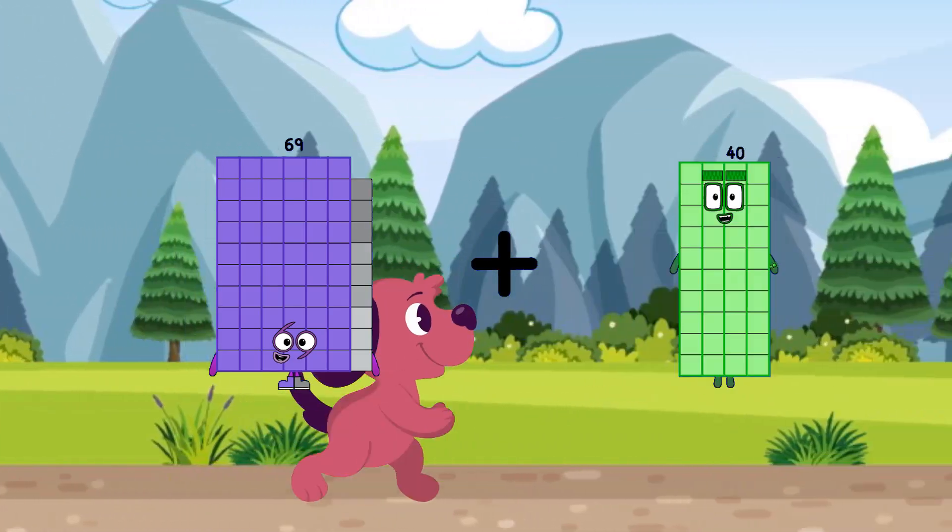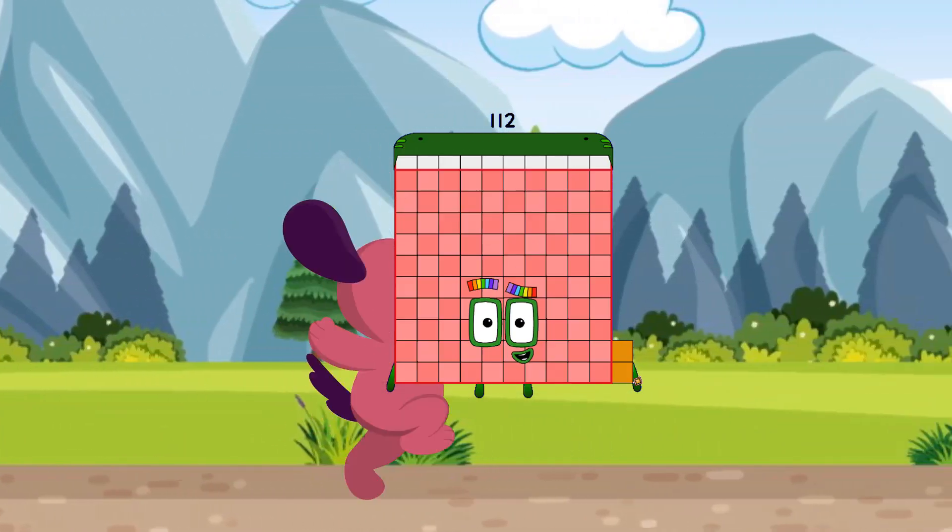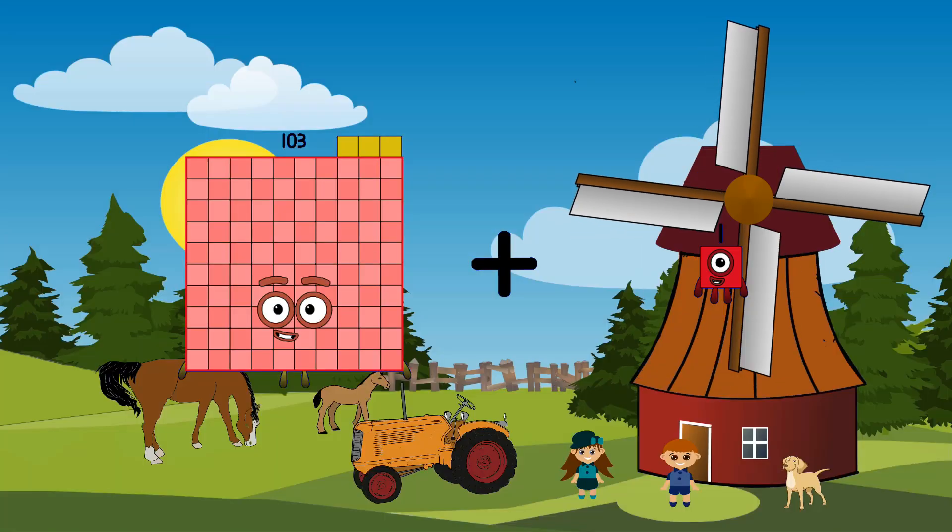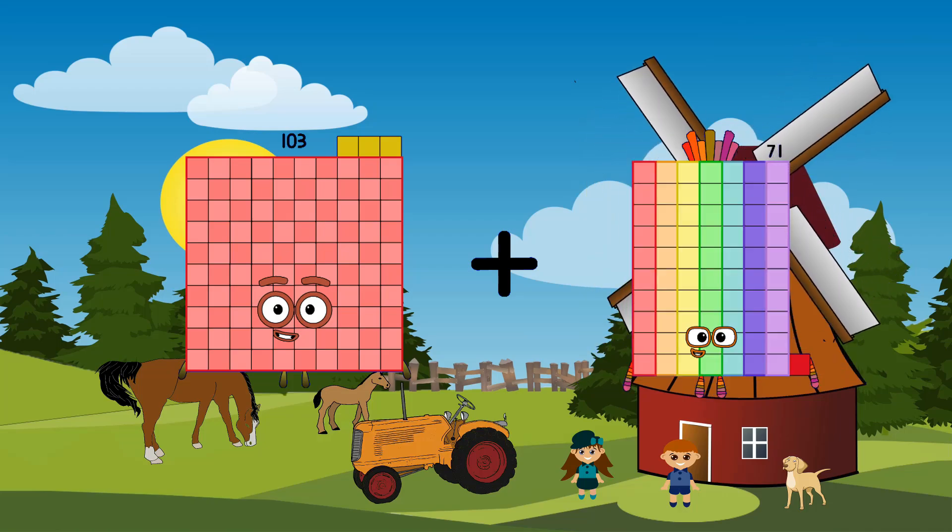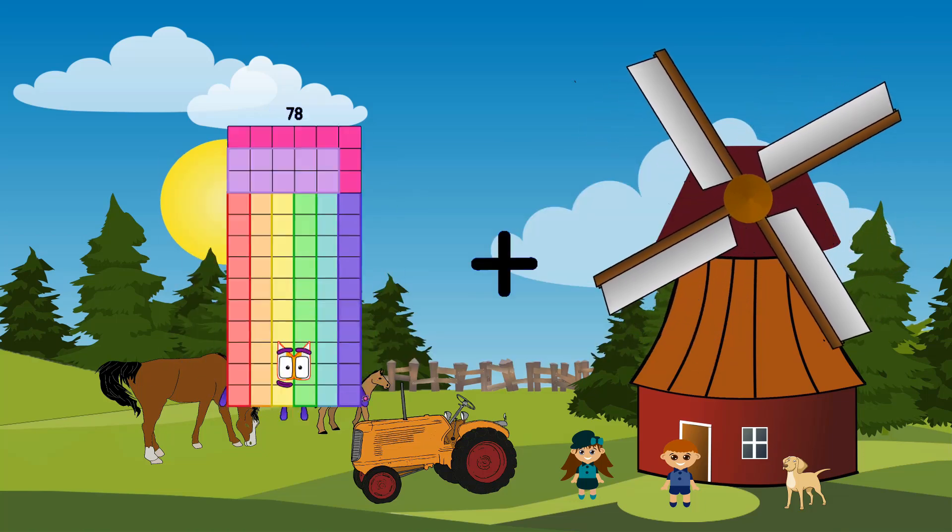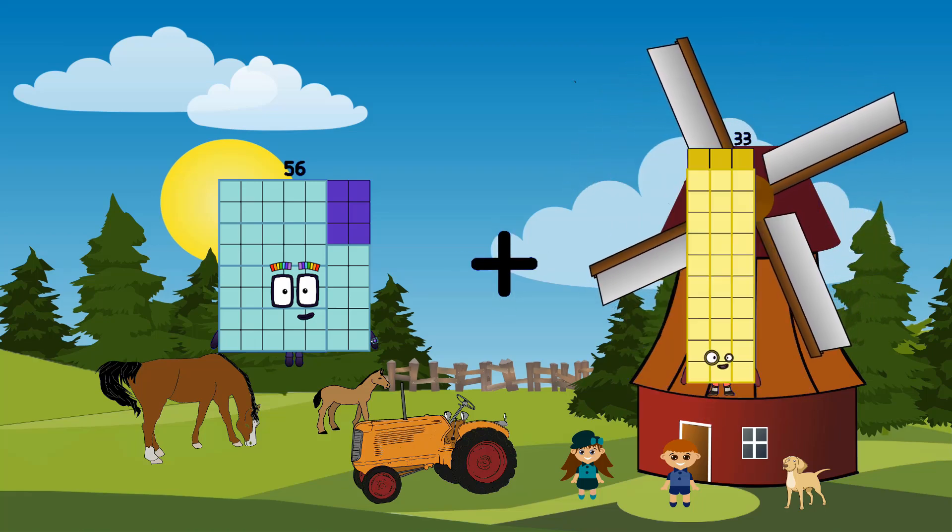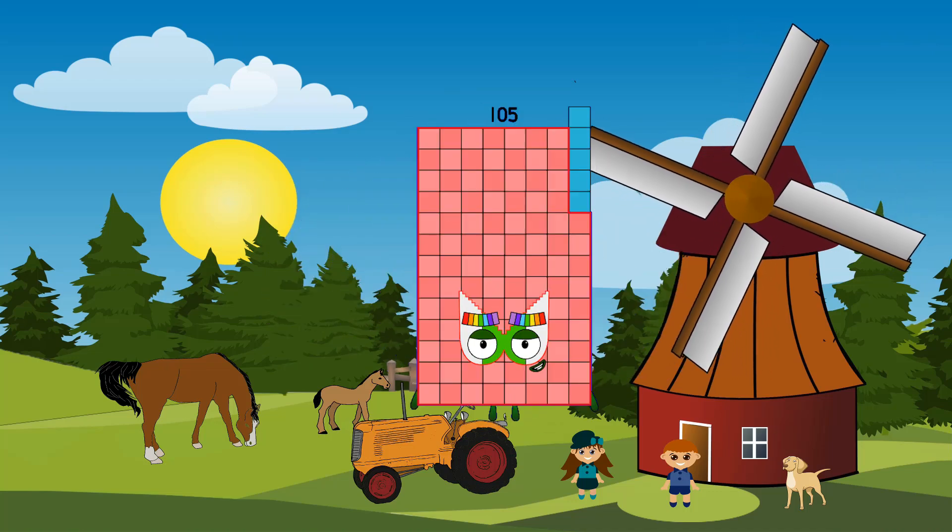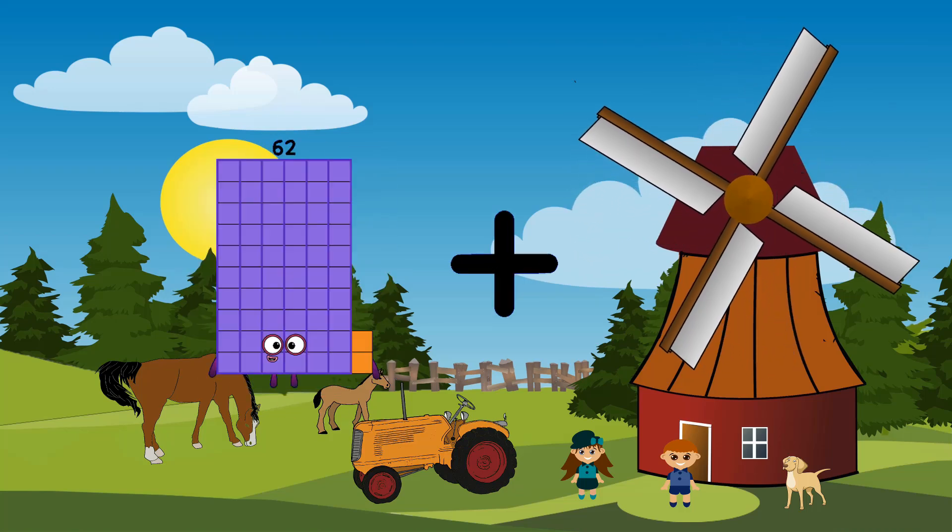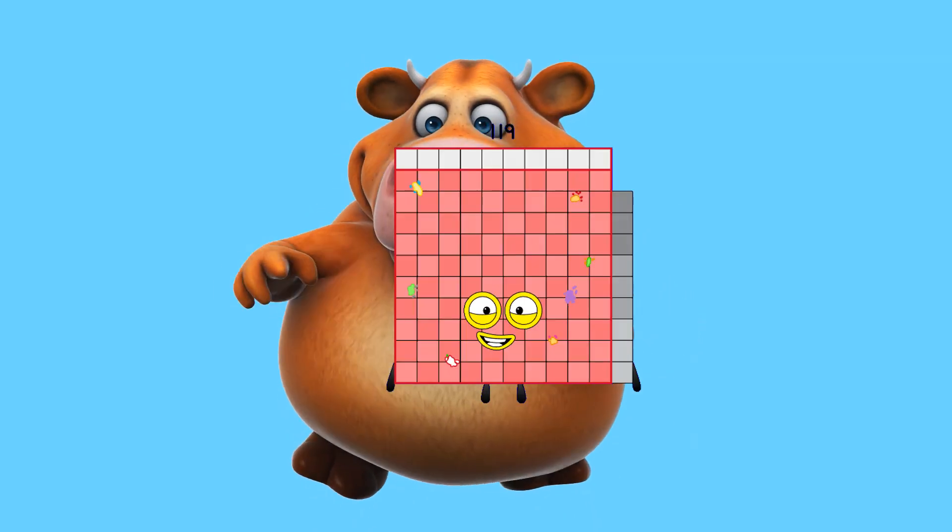69 plus 43 equals 112. 103 plus 71 equals 174. 103 plus 56 plus 49 equals 105. 62 plus 57 equals 119.